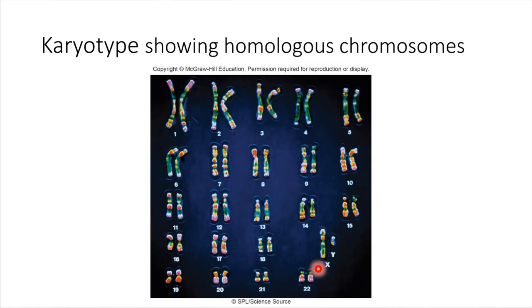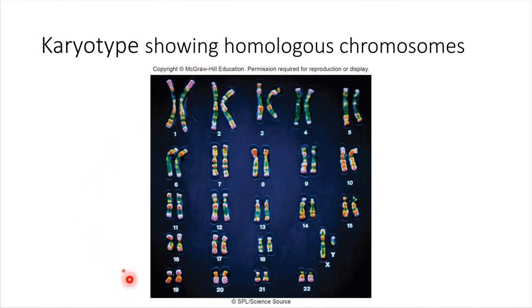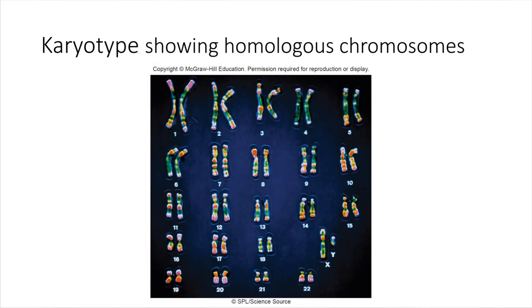Chromosomes can be visualized with a karyotype. This karyotype shows chromosomes that have been paired up with their homologues — we get one copy from mom and one copy from dad. In total we have 23 sets of chromosomes, and the sex chromosomes are shown down here: X and Y. All of our cells have a complete set of these chromosomes; if it's a cell that has a nucleus, it's going to have all the chromosomes included.